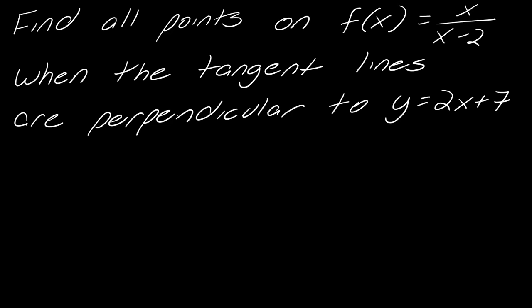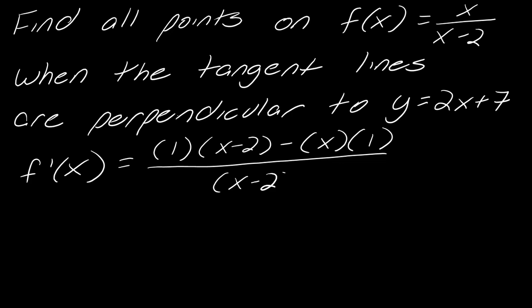Okay, so obviously we've got to take a derivative first, so I'm just going to start there. To take the derivative of this, we're going to use the quotient rule. First I take the derivative of the top, which would just be 1, and then I multiply that by the bottom, and then I subtract. I leave the top function alone and multiply that by the derivative of the bottom, which would just be 1, and then I divide all of that by the denominator squared.